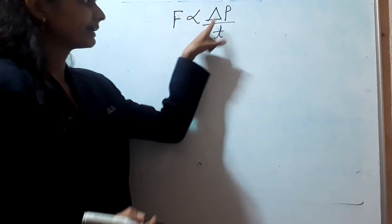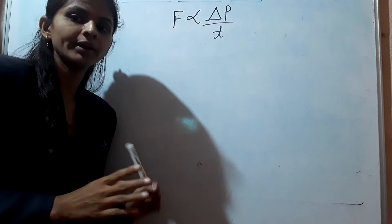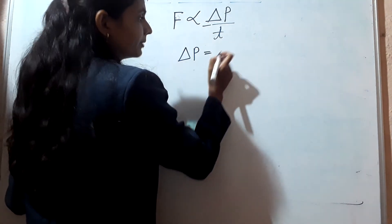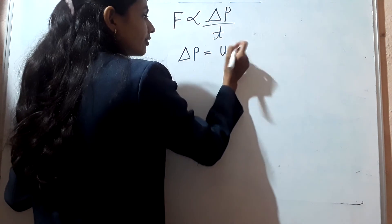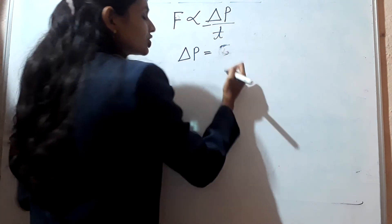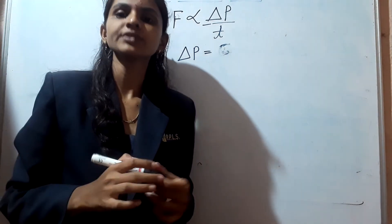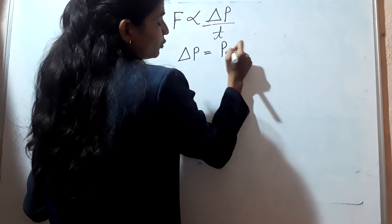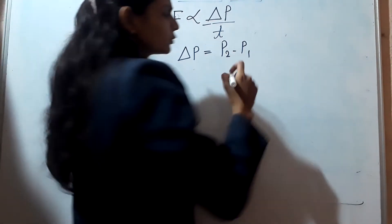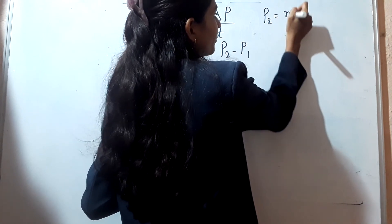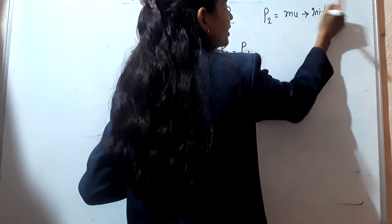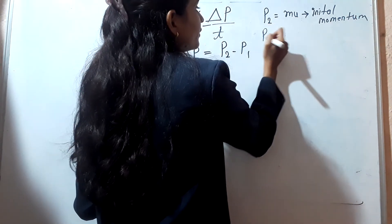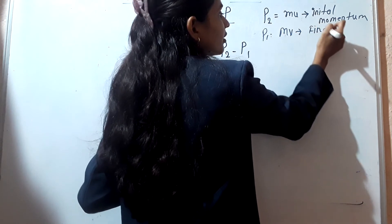The rate of change of momentum is final momentum minus initial momentum, that is P2 minus P1. Here P2 is the final momentum, which is m times v, and P1 is the initial momentum, which is m times u.